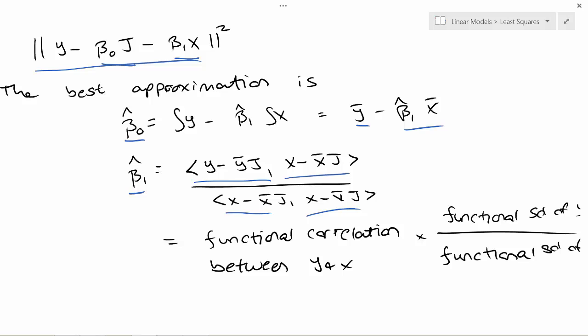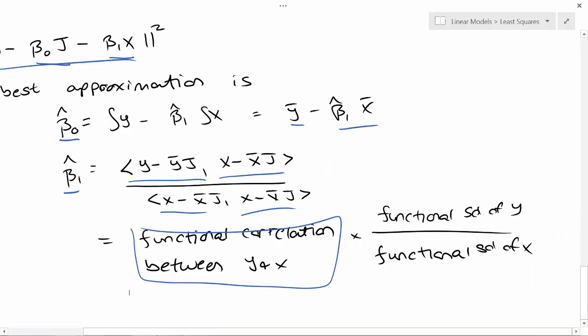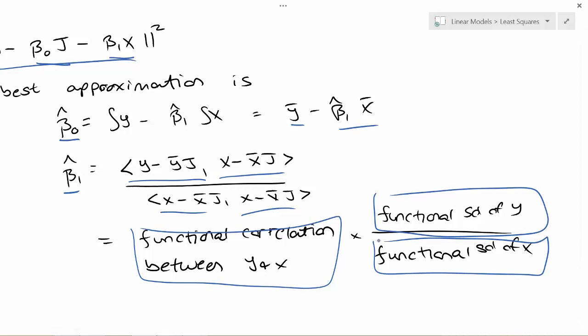And this is exactly what we found when we did the same derivation but just assumed that we had real-valued vectors instead of arbitrary elements from a Hilbert space. But we could just define this as the functional or Hilbert space correlation between y and x times the functional standard deviation of y divided by the Hilbert space standard deviation of x. So all of it carries through. It gives you an obvious way to define the relevant statistical quantities in these more complex spaces.